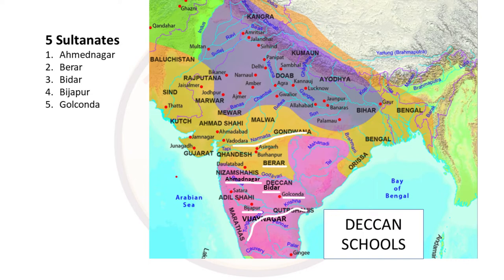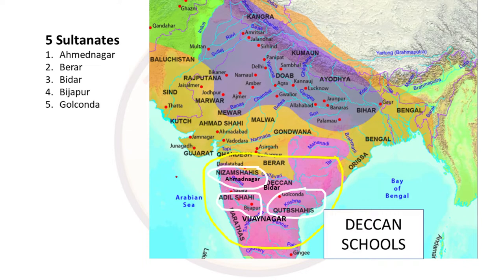The dynasty that ruled in Ahmednagar was called Nizam Shahis. Adil Shahi dynasty ruled in Bijapur. In Golkonda there were Qutub Shahis, and in Hyderabad they were called Asafiya dynasty or Asafjahi dynasty.